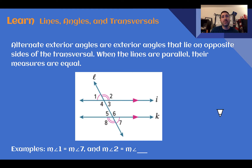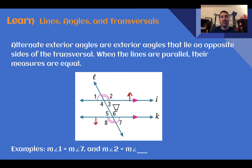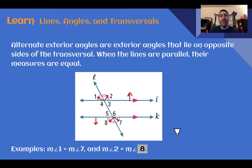Alternate exterior angles work the same way as interior ones, but they are on the outside of the parallel lines. The alternate part means they are still on opposite sides of the transversal. So angle one is alternate exterior with angle seven, and angle two is alternate exterior with angle eight. Again, those angle pairs have the same measure — angle one equals angle seven, and angle two equals angle eight.